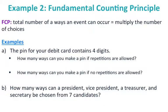Next up: the fundamental counting principle, which I abbreviate FCP. That's the total number of ways an event can occur, found by multiplying the number of choices at each step. For example, the PIN for your debit card contains 4 digits. How many ways can you make a PIN if repetitions are allowed? Repetitions means you can use the same number more than once.